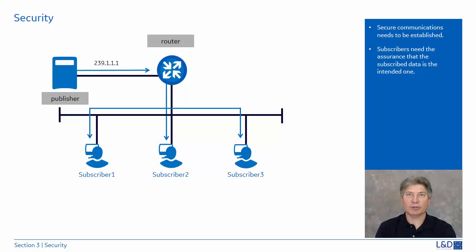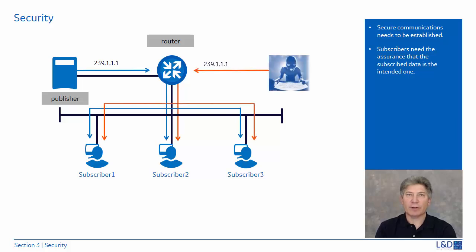In a secure network, the publisher is streaming multicast data onto the network. The subscribers are monitoring and listening for the data. Everything appears to be secure. But what happens if we have a security breach? The intruder could publish incorrect or damaging data, and the subscribers would not know any better. The subscribed data appears to be coming from the appropriate source. What assurance does the subscriber have that the data is from the intended source?